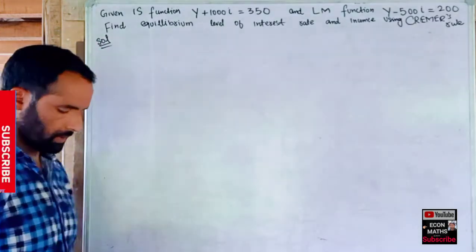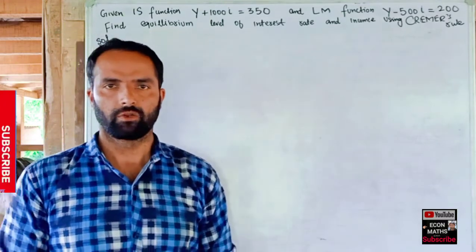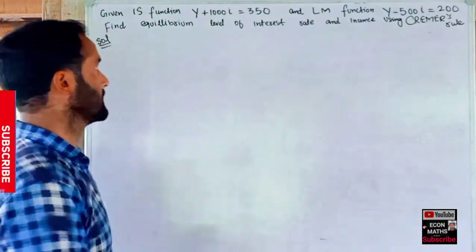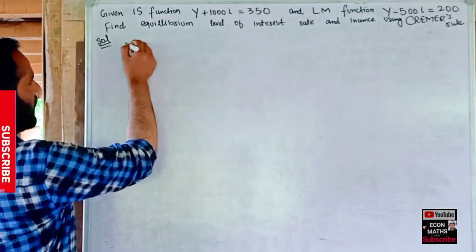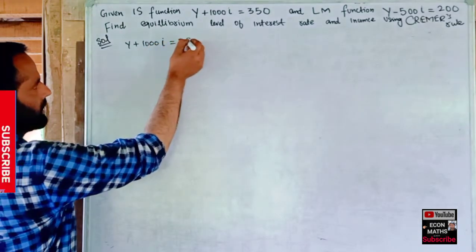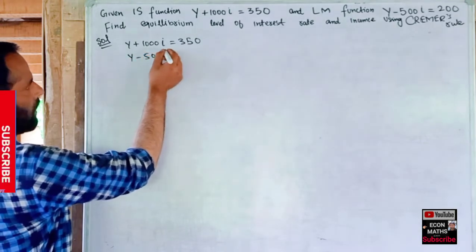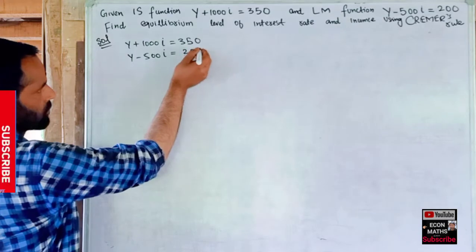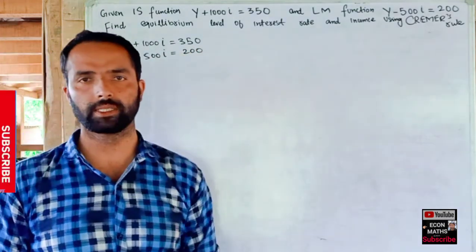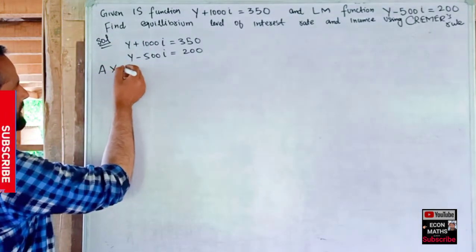We have to use Cramer's rule to find the equilibrium level of income and interest rate. The first step is to express the given system of equations in matrix form. That is, Y + 1000I = 350 is our first equation, and Y − 500I = 200 is the second equation.